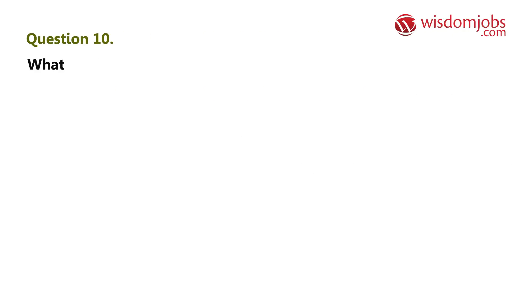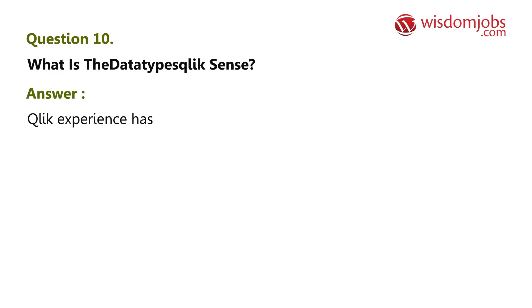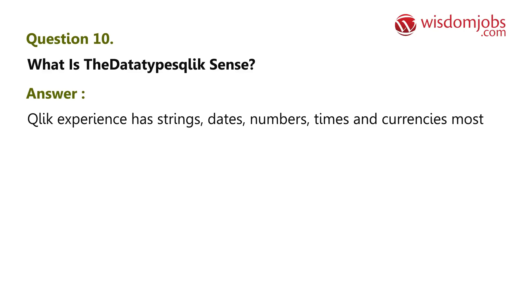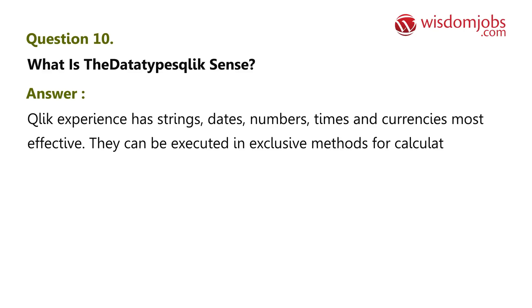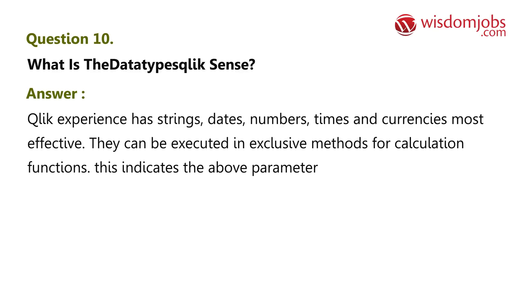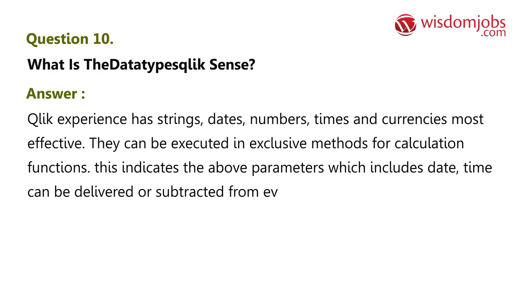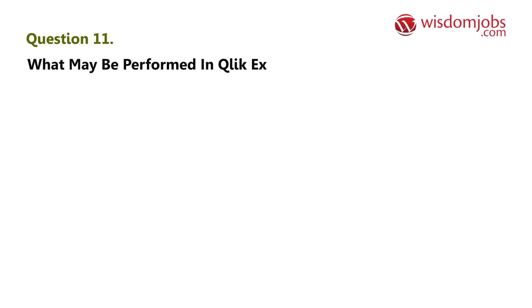Question 10: What are the data types in Qlik Sense? Answer: Qlik Sense has strings, dates, numbers, times, and currencies. They can be used in different ways for calculation functions. This means parameters such as date and time can be added or subtracted from each other.